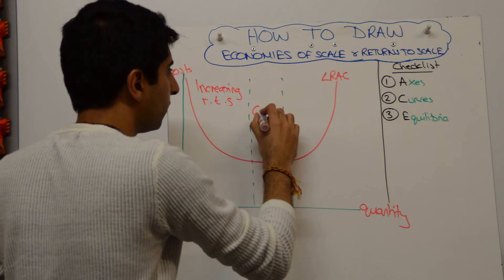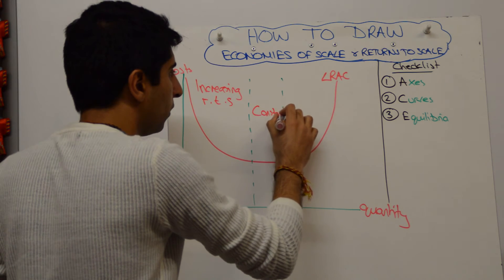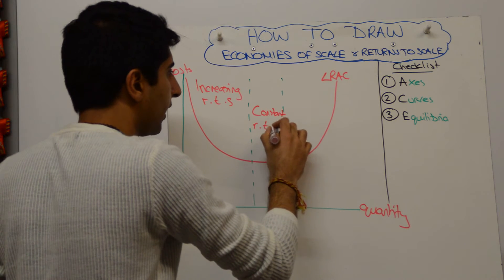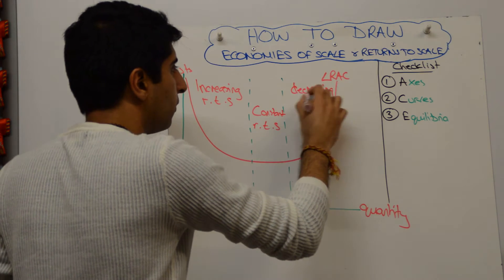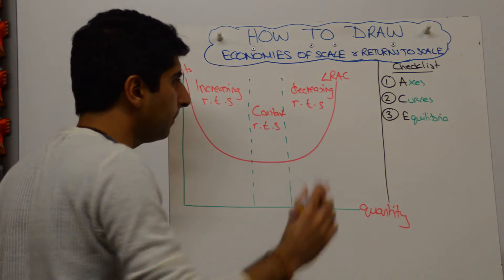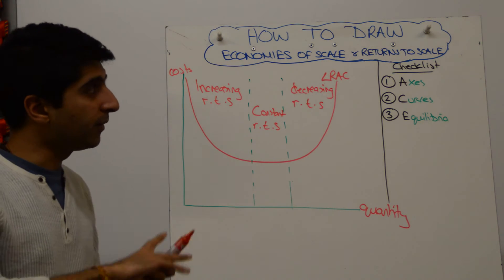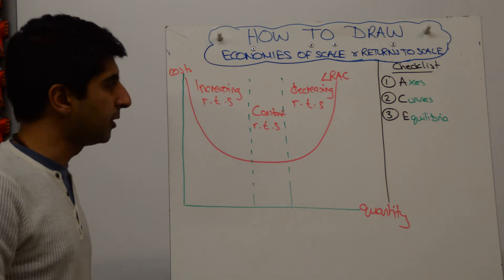Here we've got constant returns to scale, and here we've got decreasing returns to scale. You label those three things. Returns to scale have been shown.